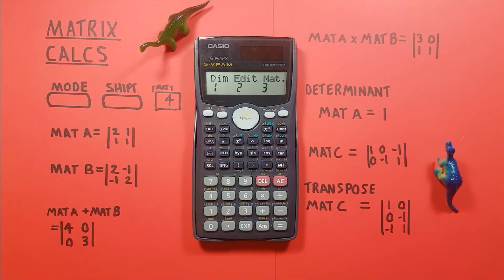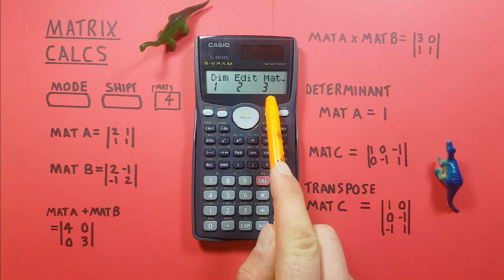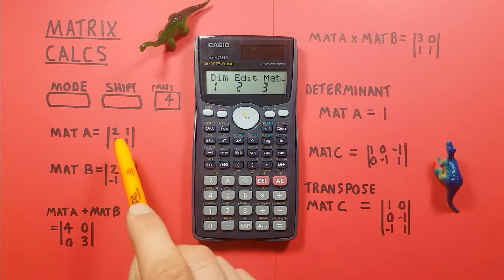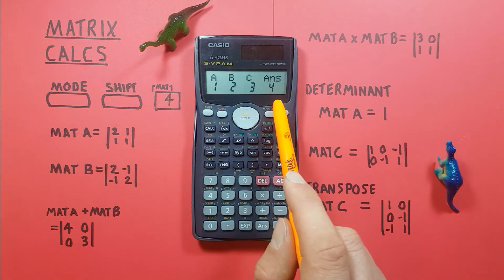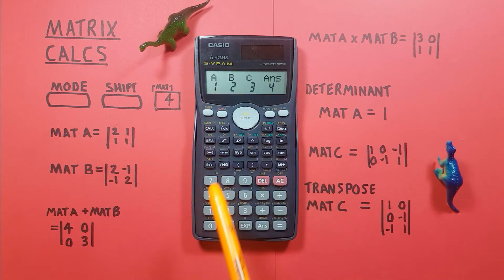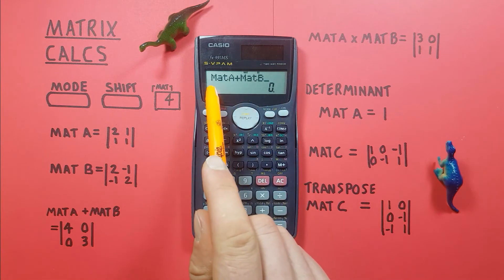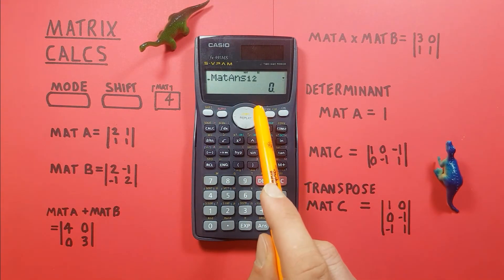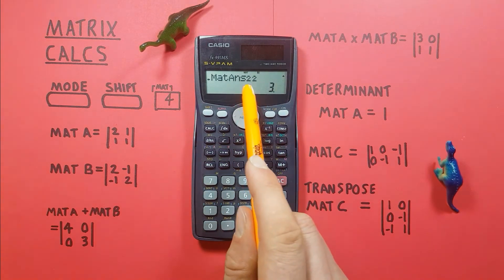First let's do some basic matrix addition — adding matrix A and matrix B. Press shift+4 and choose option 3 to select a matrix. Option 2 is edit, in case you need to go back and change a matrix, but we're happy with ours so we go straight to 3. Select matrix A, press plus, then select matrix B, and press equals. The result is: row 1 column 1 = 4, row 1 column 2 = 0, row 2 column 1 = 0, row 2 column 2 = 3.